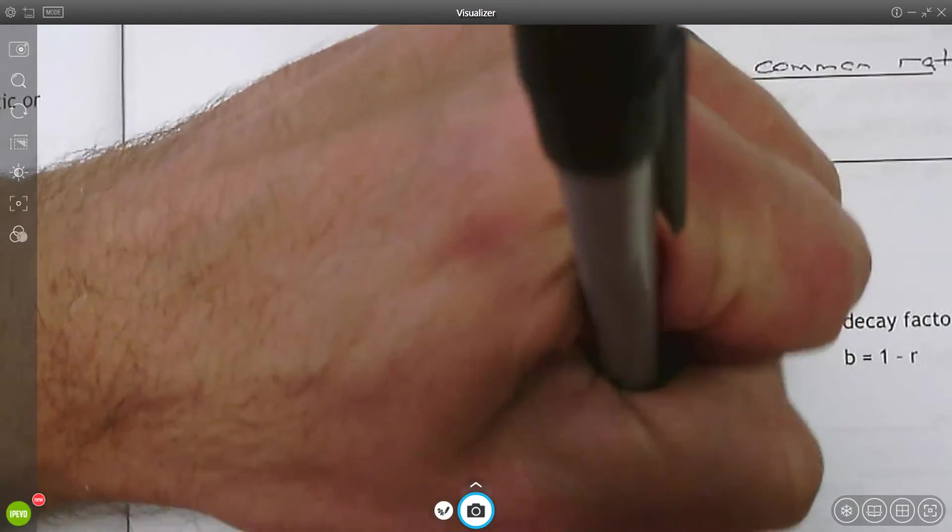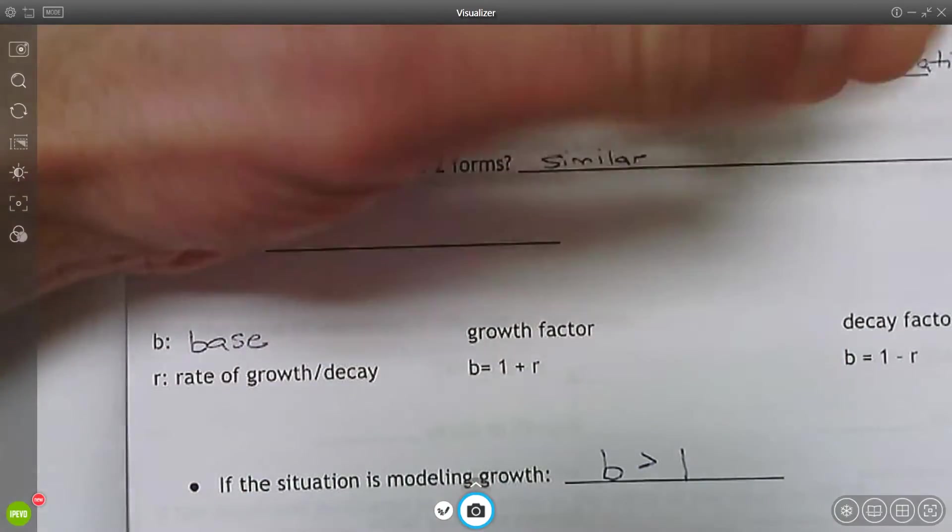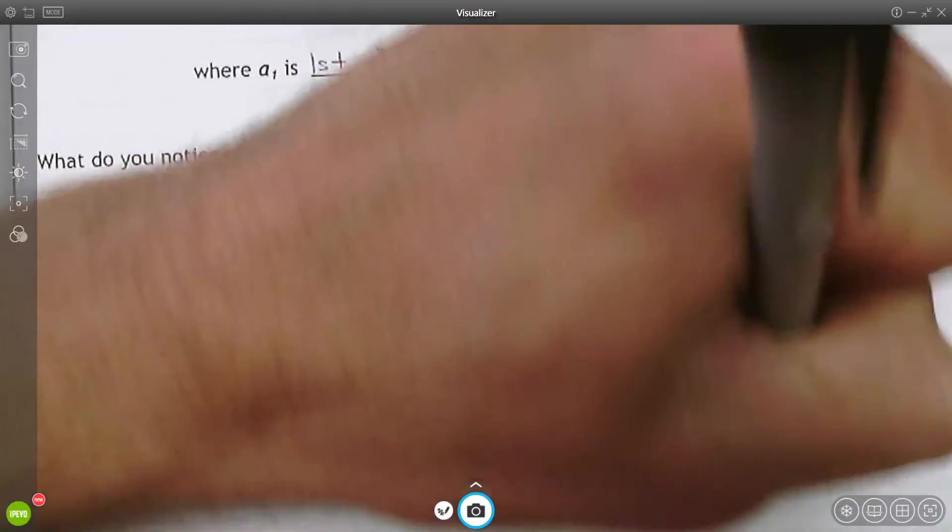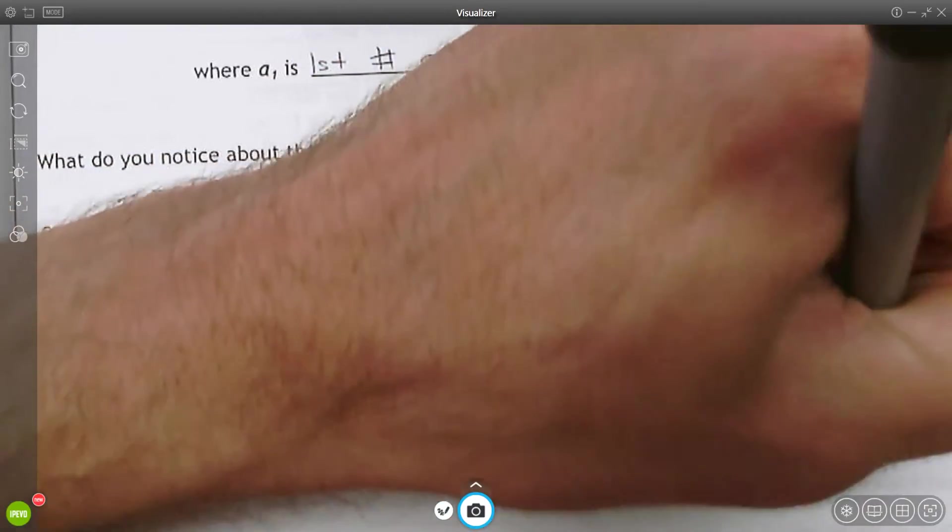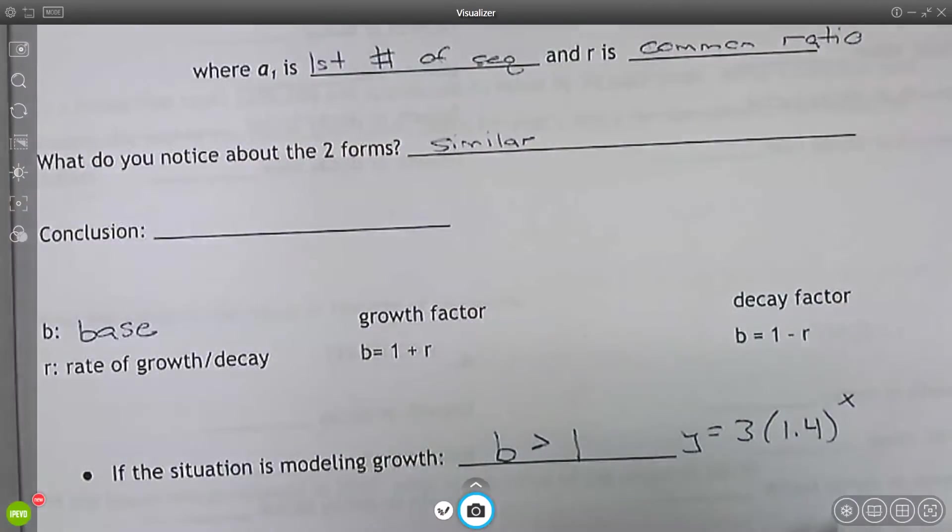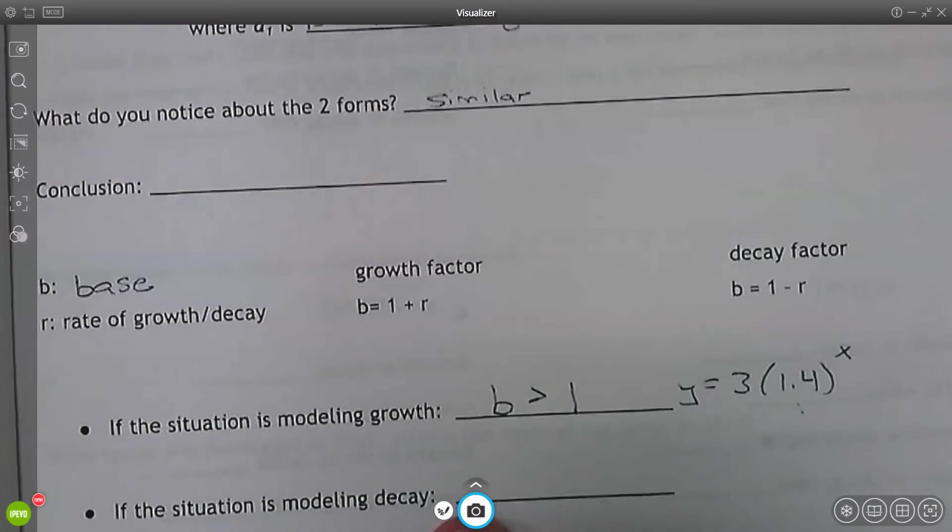So if that base is a number larger than one, greater than one. Here's an example, y equals three times 1.4 raised to the x. That base 1.4, that's bigger than one. That's exponential growth.